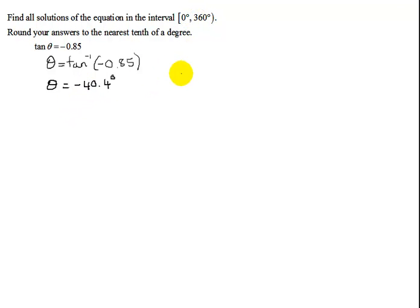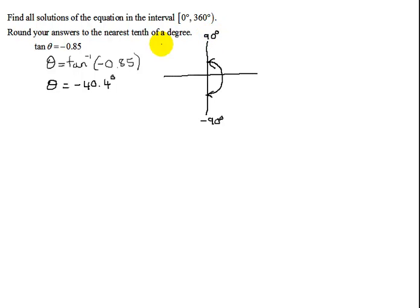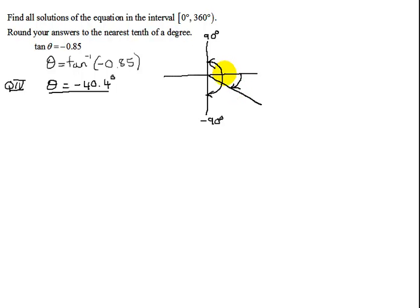Why did the calculator give me that answer? Remember the definition of the inverse trig functions: the inverse tangent says my answer has to lie between negative pi over 2 (negative 90 degrees) and positive 90 degrees. Since the tangent function was negative, it can't be in quadrant one because tangent is positive there. The answer will be in quadrant four. So it gives me an answer in quadrant four, but unfortunately this angle does not lie between zero and 360.